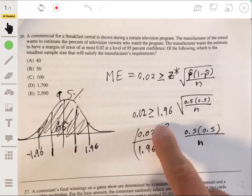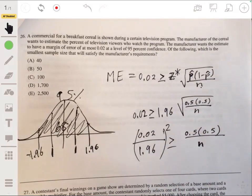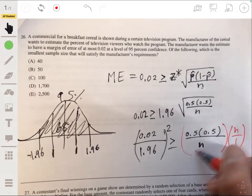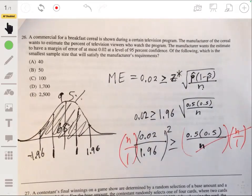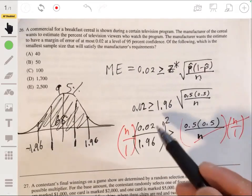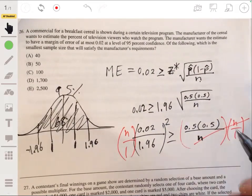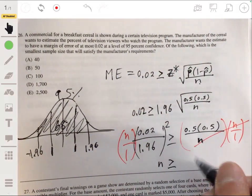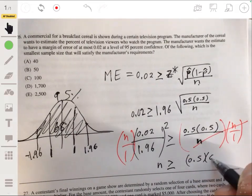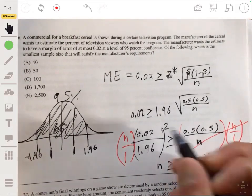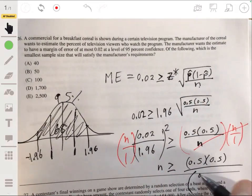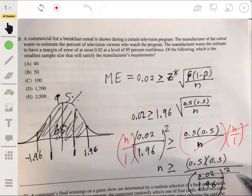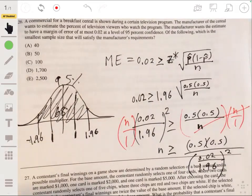And what you eventually get is you multiply that by n. You're technically multiplying both sides by n over 1. That cancels there, and the n ends up over there. And then you divide by this whole quantity. So what you have is n is greater than or equal to 0.5 times 0.5 or 0.25 divided by this whole thing, divided by the 0.02 over the 1.96 squared. So you can just basically crank this out in your calculator.